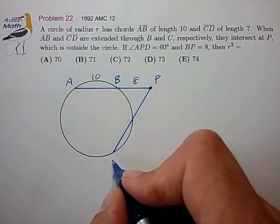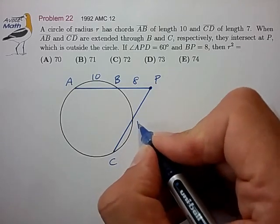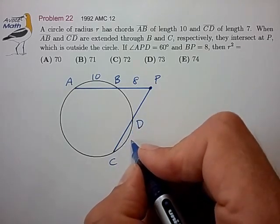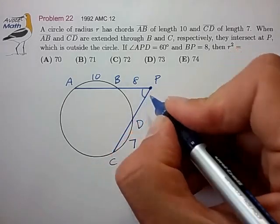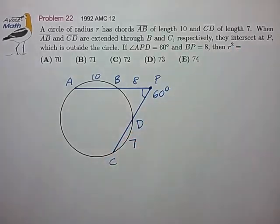So we have this being CD, and CD is of length 7, and this angle here is 60 degrees.